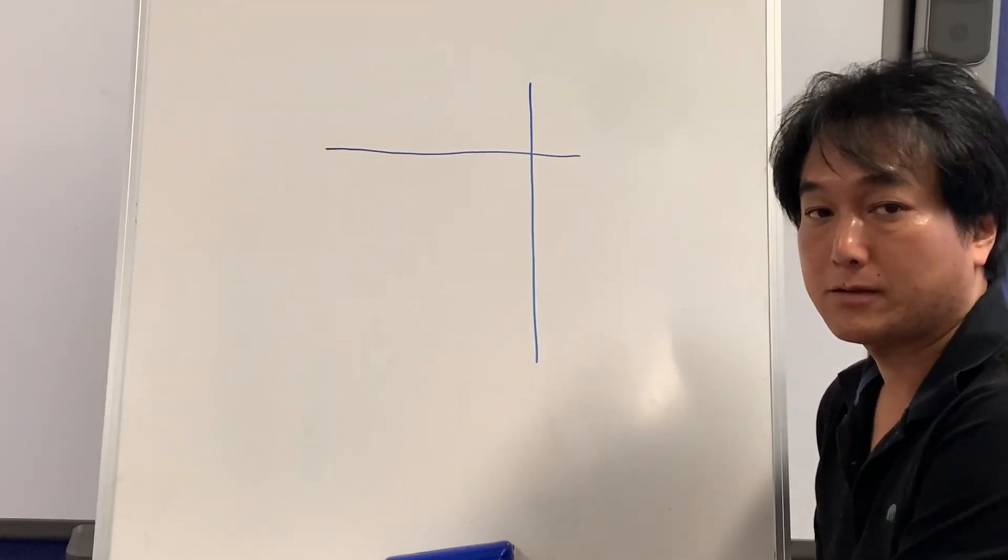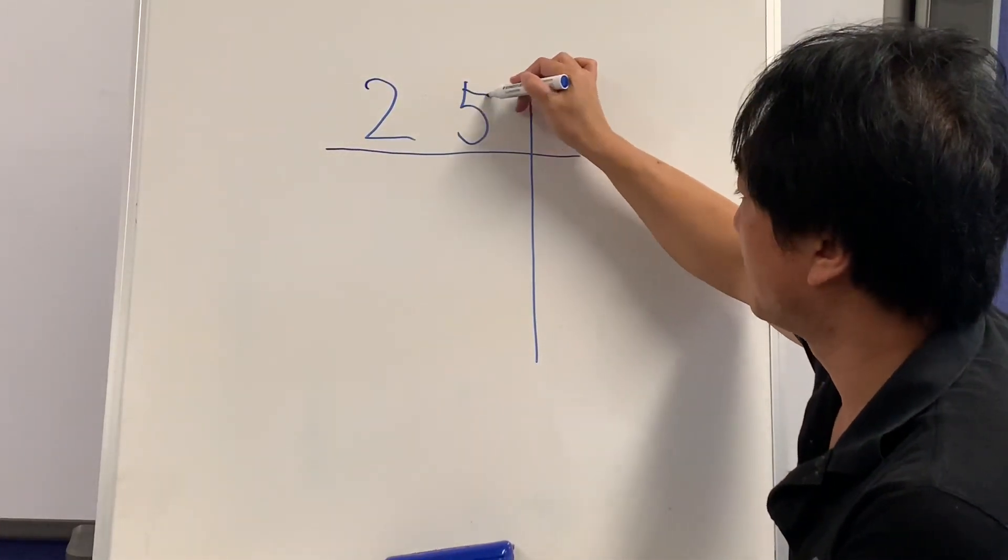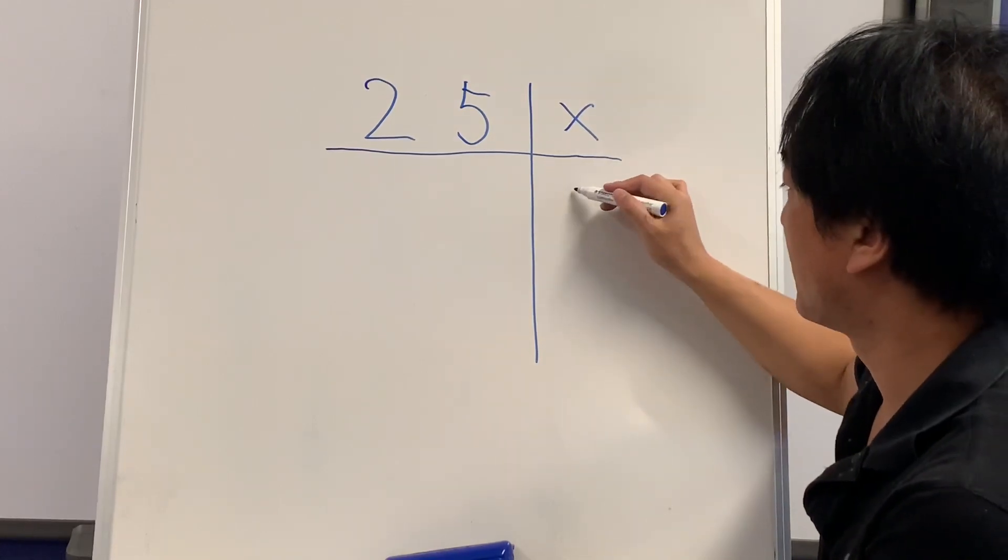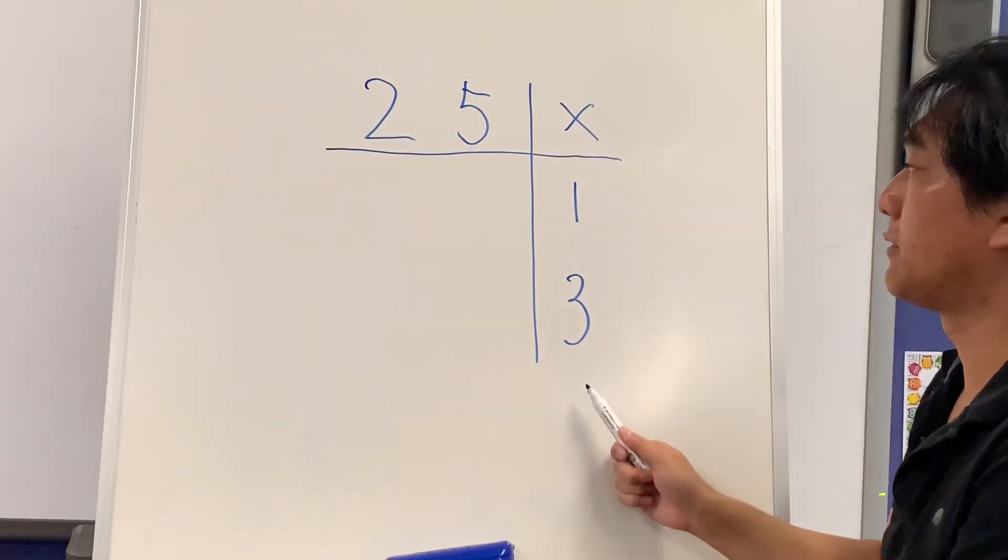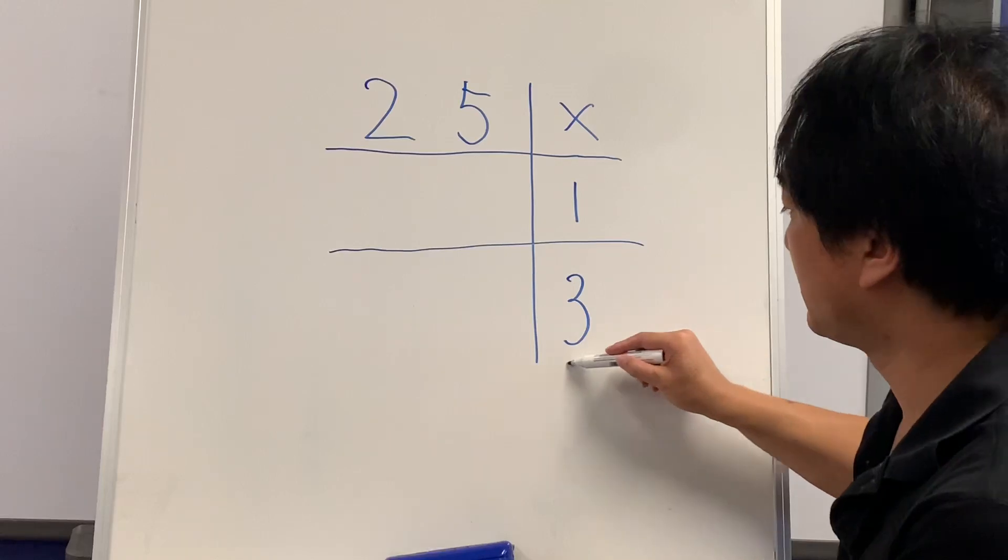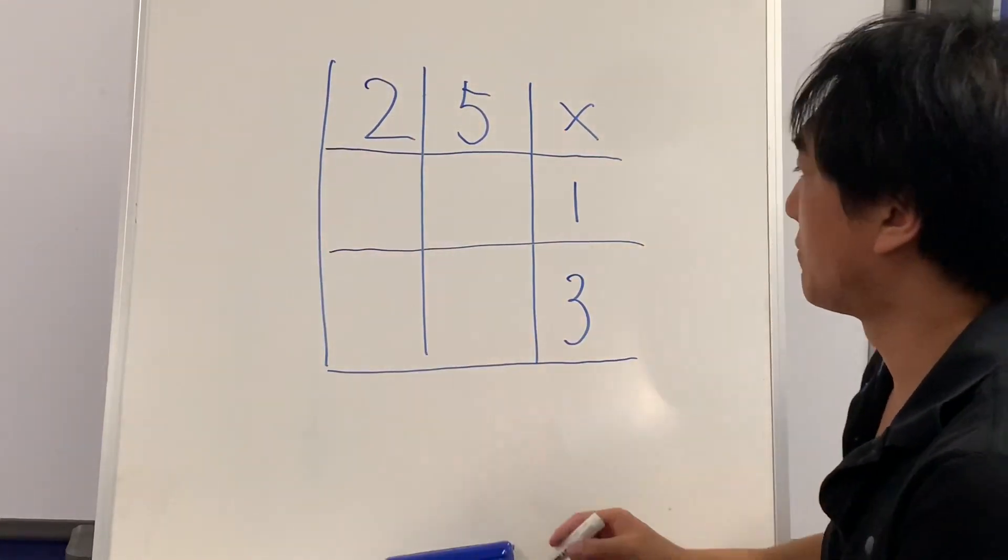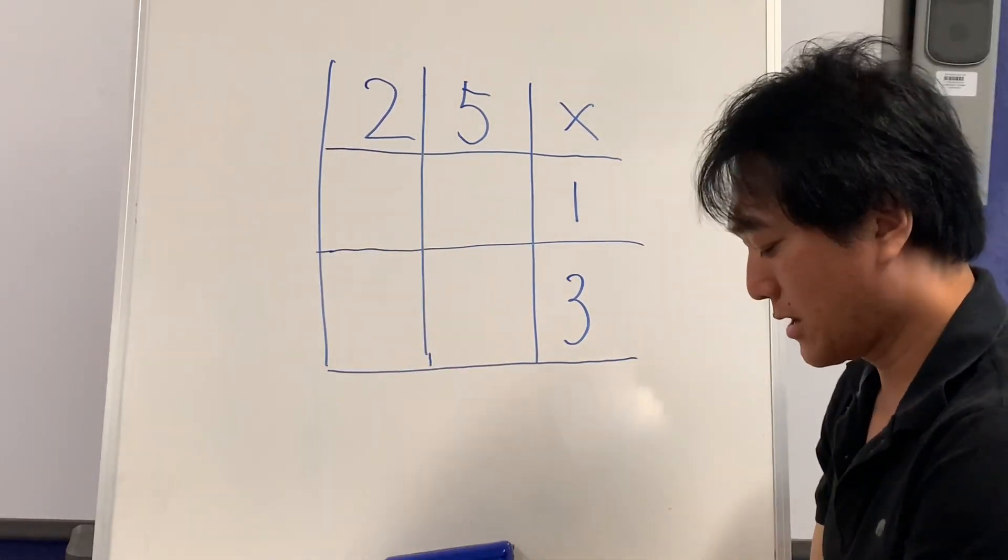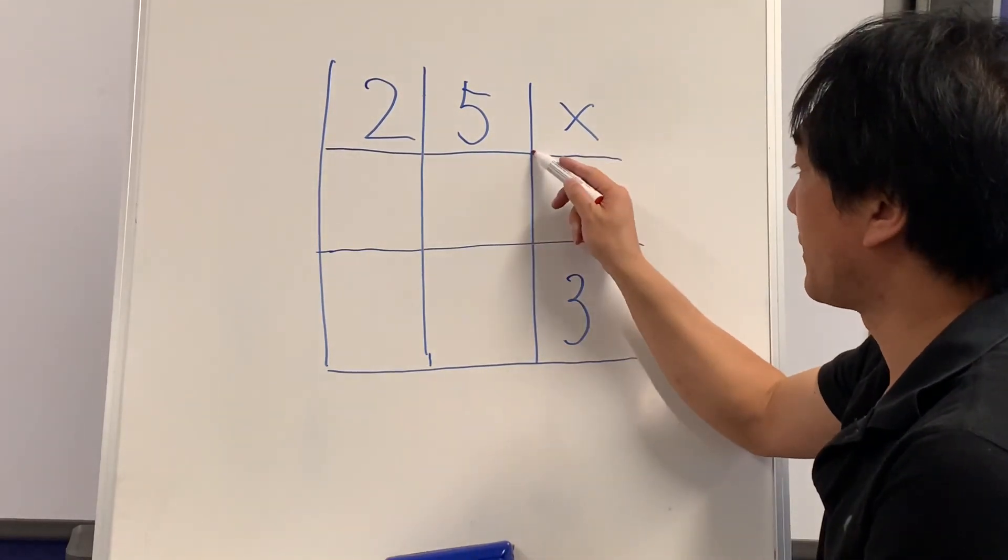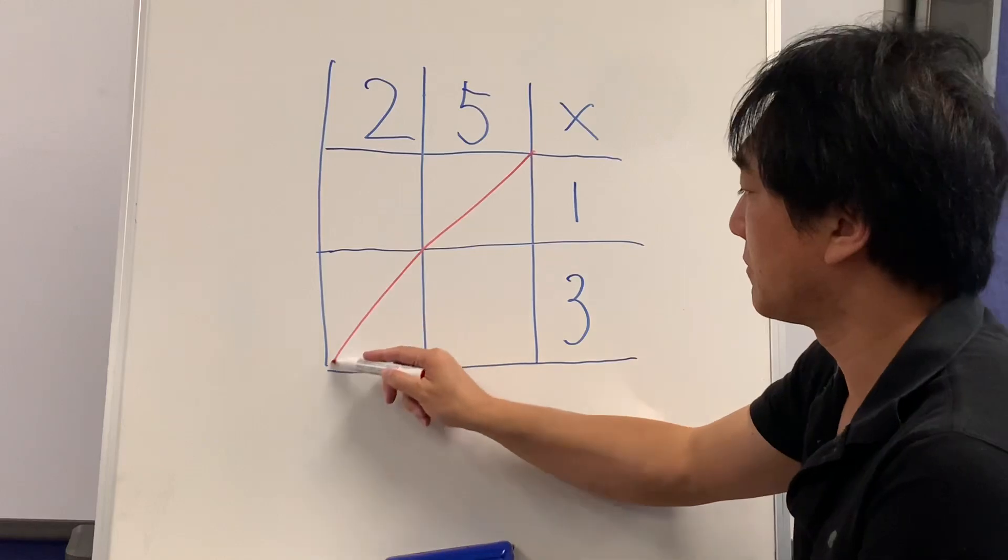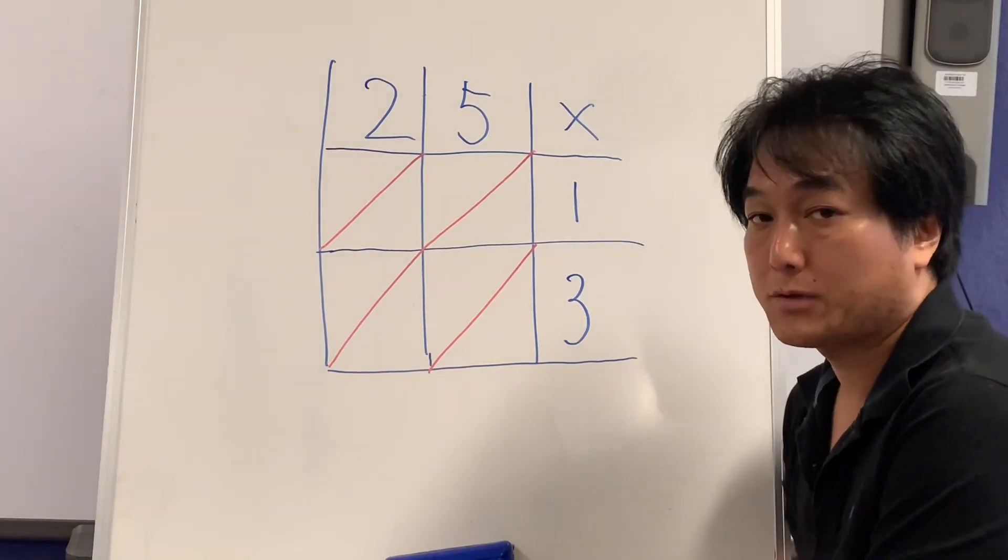This is how you set up lattice. Ready? 25 multiplied by 13. So we go side, multiply, and go down. Now I'm going to make a lattice, the grid. Then something important is you're going to draw a diagonal line from the multiplication sign.